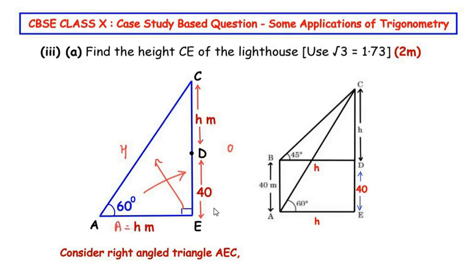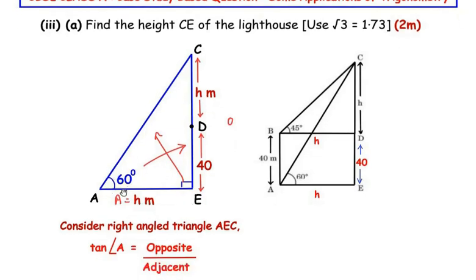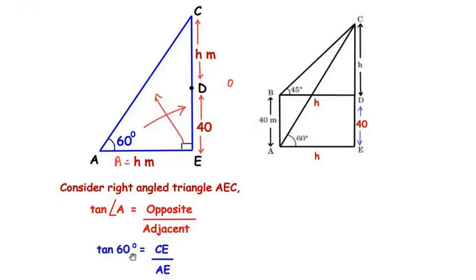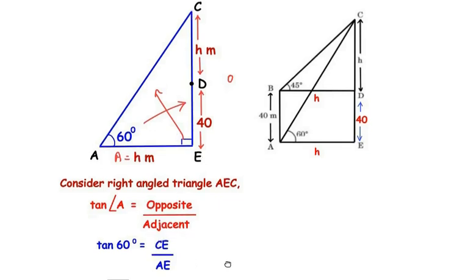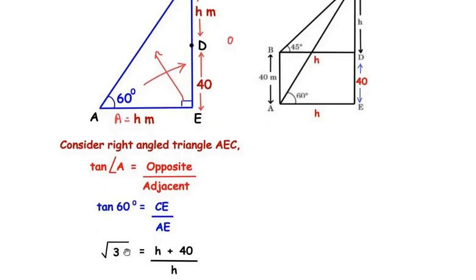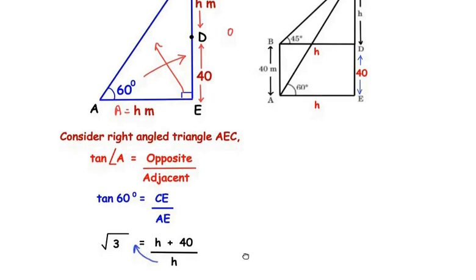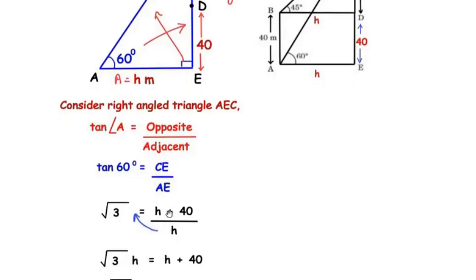We need to find CE (opposite side) and we already have AE (adjacent side), so we do not need the hypotenuse. The trigonometric ratio using opposite and adjacent is tangent. So tan(A) = opposite/adjacent. Angle A is 60 degrees, so tan(60°) = CE/AE = (h + 40)/h. tan 60° = √3, so √3 = (h + 40)/h. Multiplying both sides by h gives √3·h = h + 40.